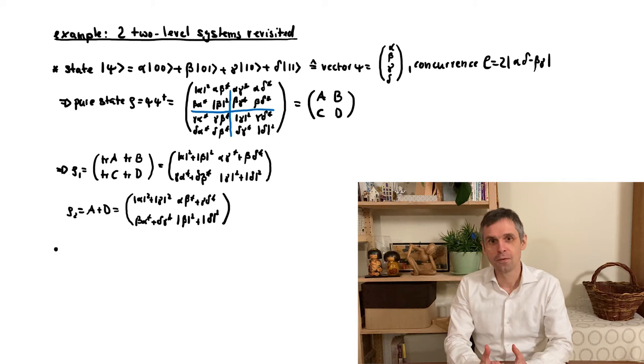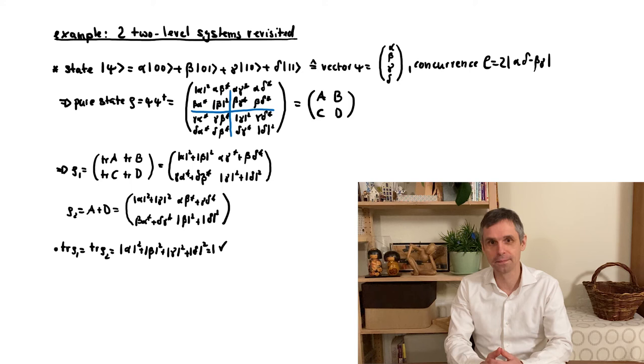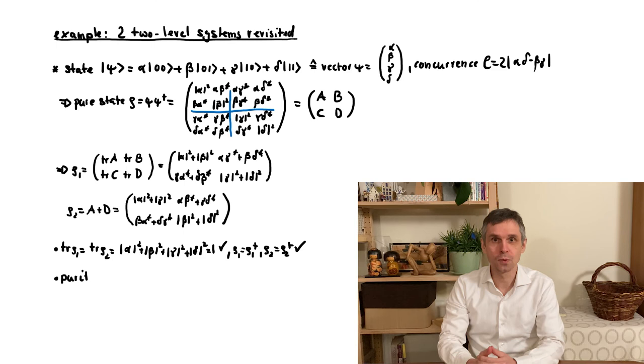First of all, we see that the traces of these density matrices are just the normalization condition for our pure state of the composite system, so this will be automatically 1. Secondly, we see that these matrices are indeed Hermitian matrices. And finally, and here we come to our key point, we can also use these explicit expressions to work out the purities of these two reduced density matrices.